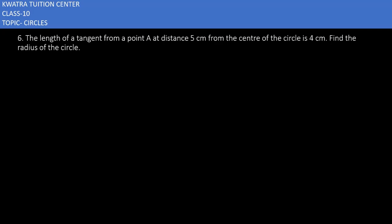The length of a tangent from a point A at distance 5 cm from the center of the circle is 4 cm. Find the radius of the circle.